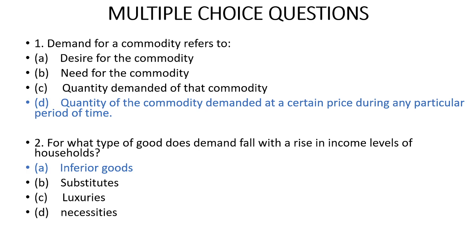Next question: for what types of goods does demand fall with the rise in income level of the household? Basically, we call them inferior goods. For inferior goods, demand falls as consumer income increases. For example, maize, bajra, jowar — these are inferior goods. When the consumer's income increases, the consumer switches from these goods to better goods. So the answer will be A: inferior goods.